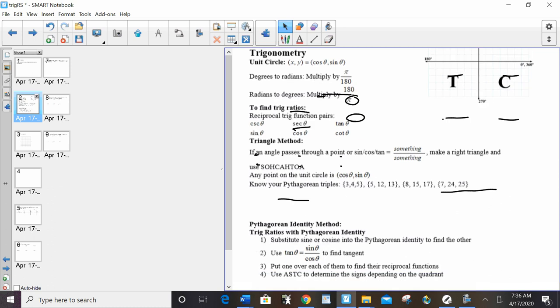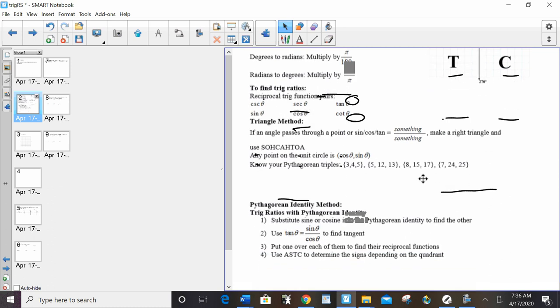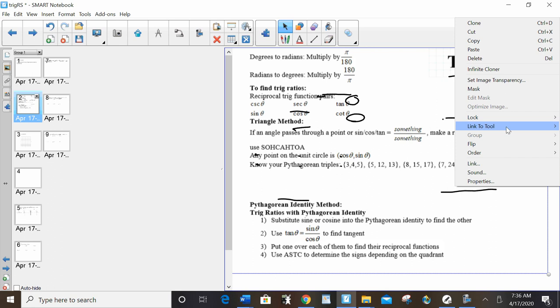Know your Pythagorean triples. 3, 4, 5, 5, 12, 13, 8, 15, 17, 7, 24, 25.